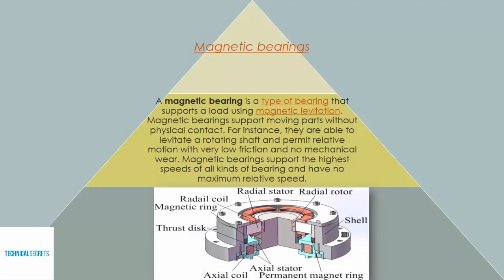Number three: magnetic bearings. A magnetic bearing is a type of bearing that supports a load using magnetic levitation. Magnetic bearings support moving parts without physical contact. For instance, they are able to levitate a rotating shaft and permit relative motion with very low friction and no mechanical wear. Magnetic bearings support the highest speed of all kinds of bearings and have no maximum relative speed. The components include radial coil, magnetic ring, thrust disc, exit wire, shell, radial rotor, and permanent magnetic ring.